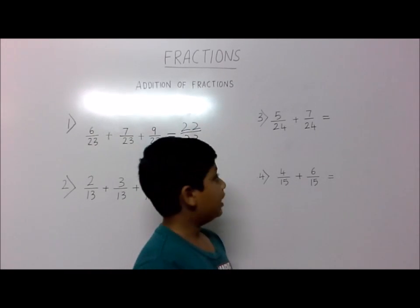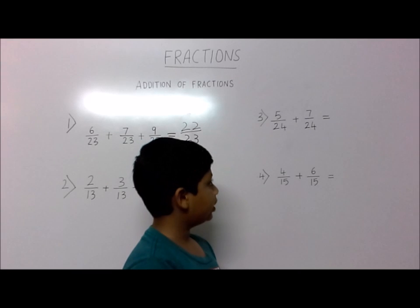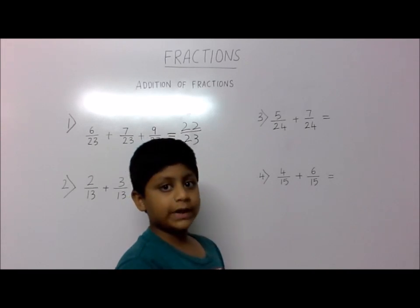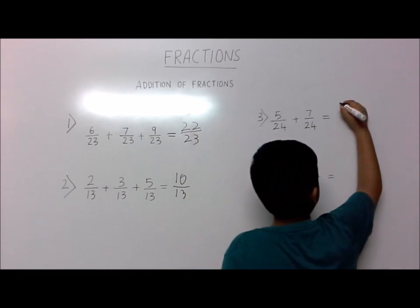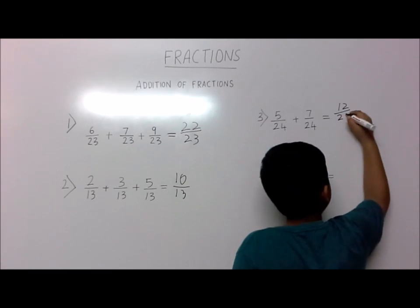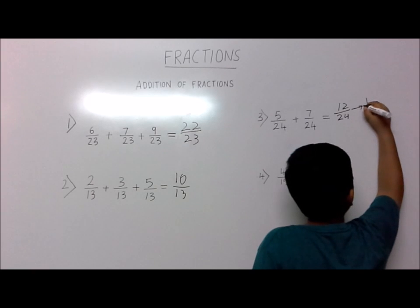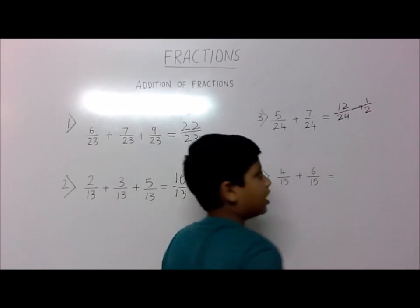Third question: 5 by 24 plus 7 by 24. 5 plus 7 is 12, so the answer is 12 by 24, which can be simplified to 1 by 2, which is a half.